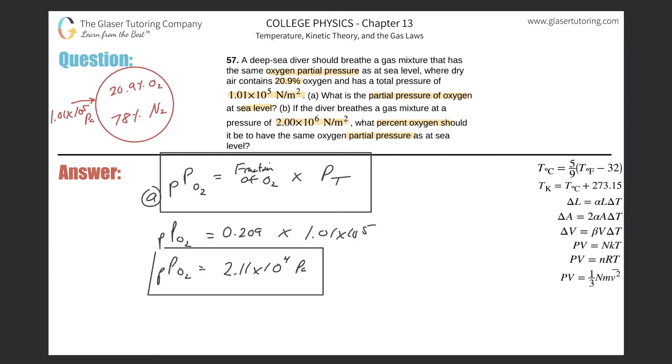What percent oxygen should it be to have the same oxygen partial pressure as at sea level? So basically, we need to have this partial pressure of oxygen, what we just found. This has to be the partial pressure of oxygen. And we now know that the total pressure of the gas mixture is this, and they're asking us for the percent or aka the fraction.